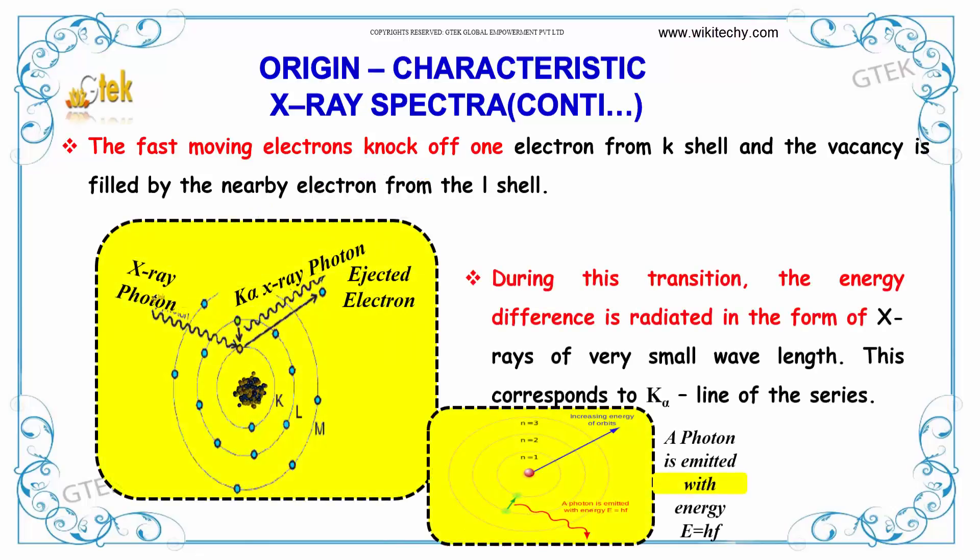The fast-moving electrons knock off one electron from K shell and the vacancies are filled by the nearby electrons from the L shell. So an X-ray is passed, this will take the electron from that particular place and the other electron from the other shell will move to the neighbor shell. During this transition, the energy difference is radiated in the form of X-rays of very small wavelength. This corresponds to K alpha line of the series.